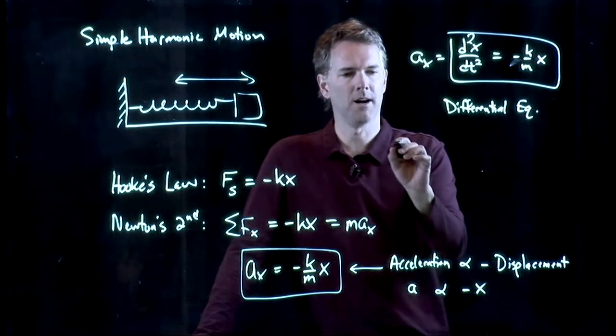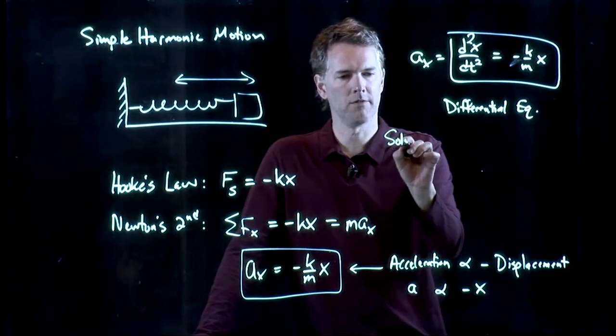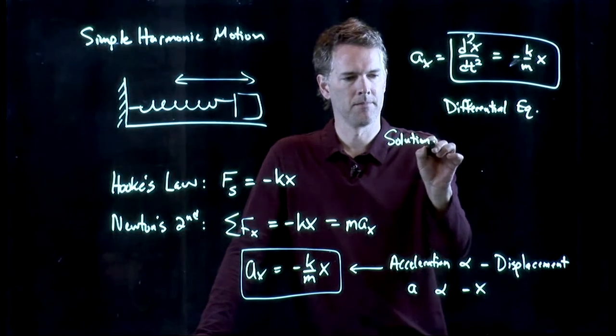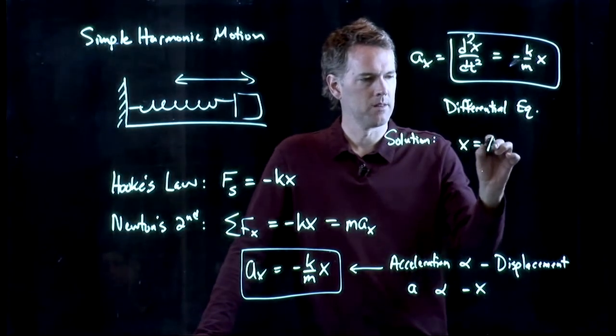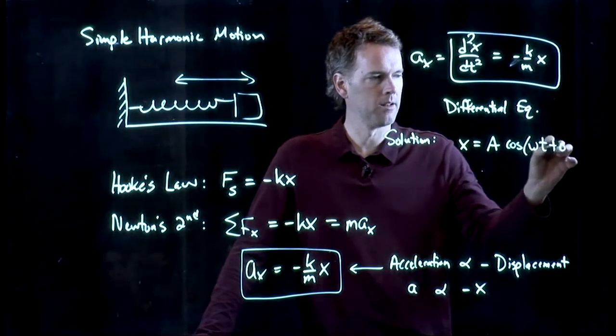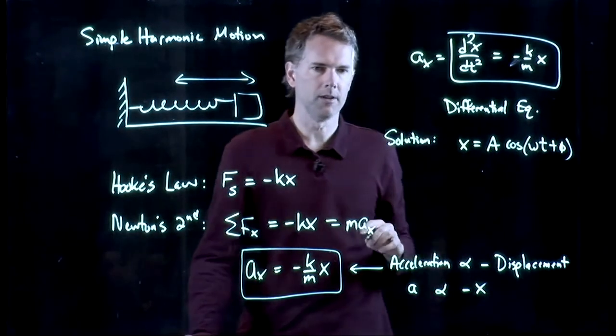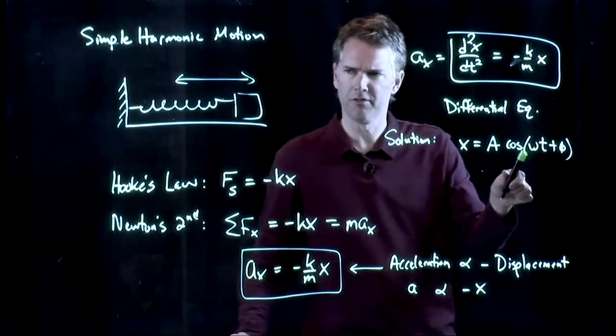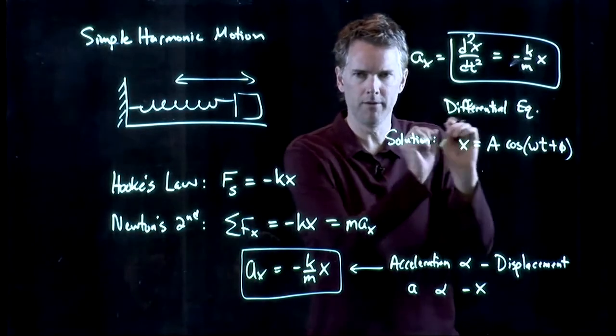That minus sign turns out to be really key because we need the function to flip its sign. And so one possible solution is the following: x equals a cosine of omega t plus phi. Let's just think about that for a second.